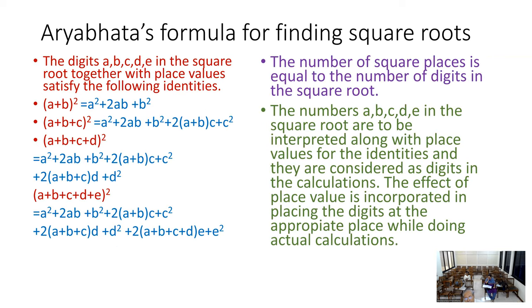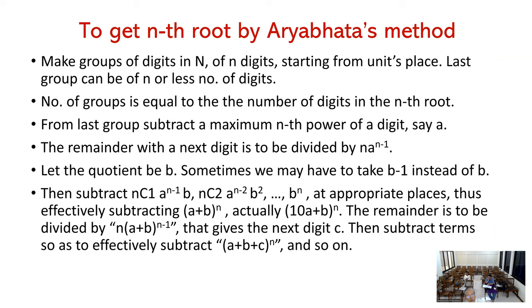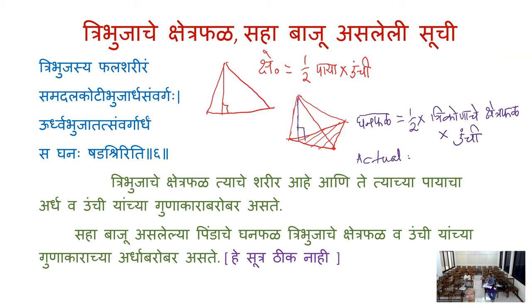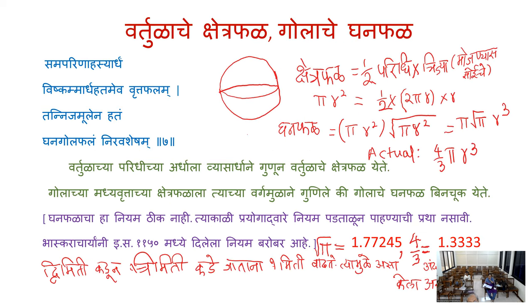Aryabhata's formulas were also discussed last time. The area of a triangle is correctly given by Aryabhata as one-half base times height. However, the volume of a tetrahedron given by Aryabhata is not correct — he used one-half but it should be one-third; this was later corrected. The area of a circle as πr² was given correctly by Aryabhata, but the volume of the sphere formula given by Aryabhata was not correct; the correct formula was given separately.